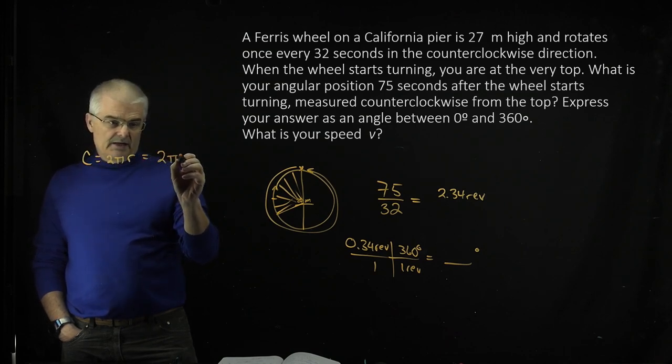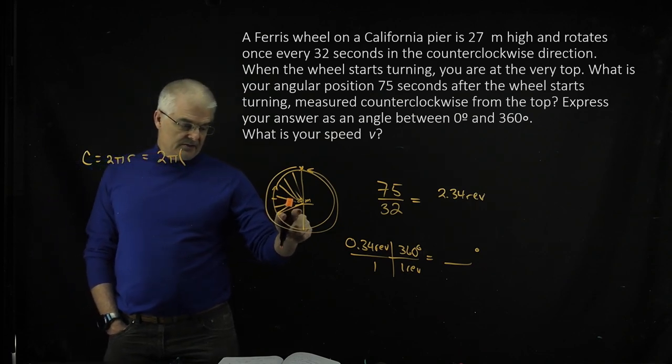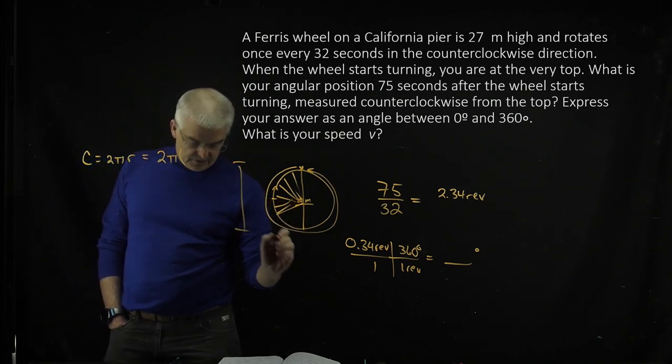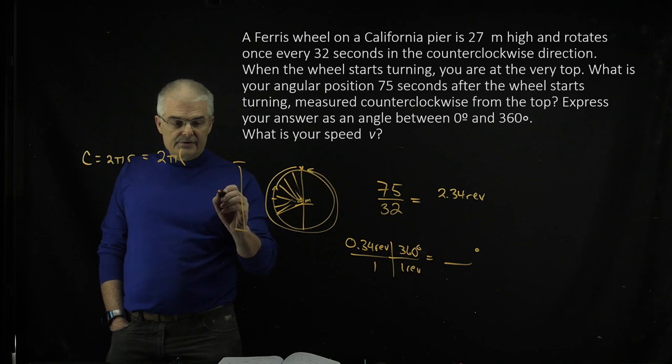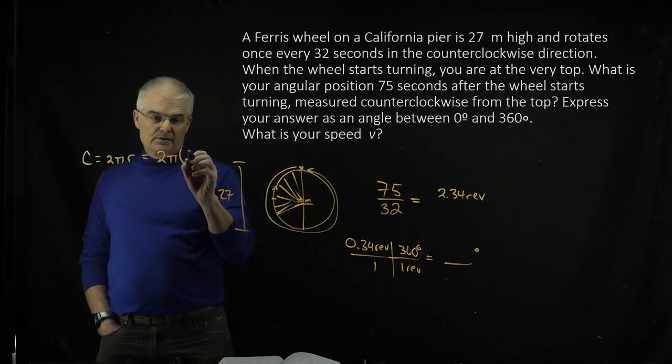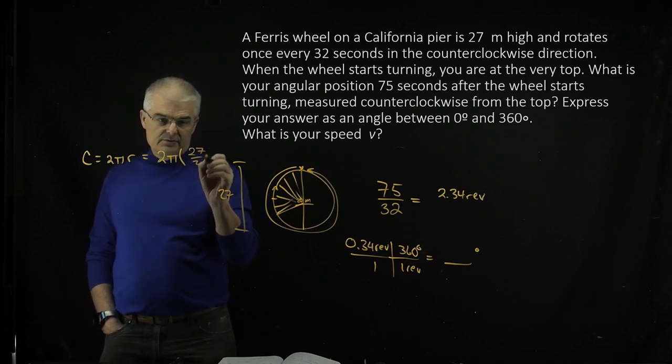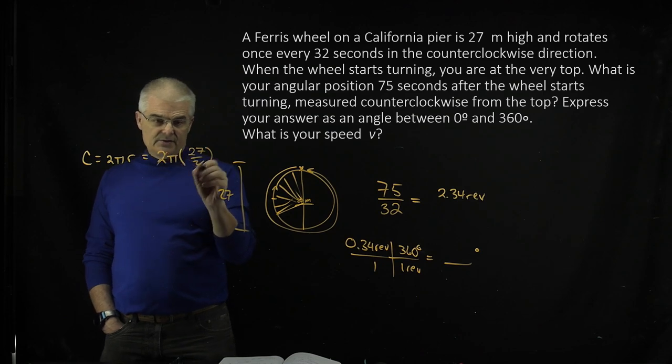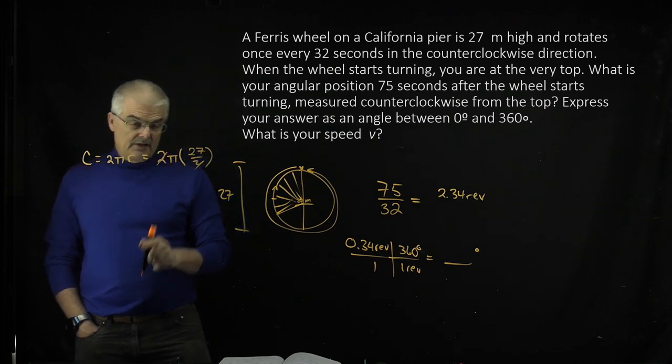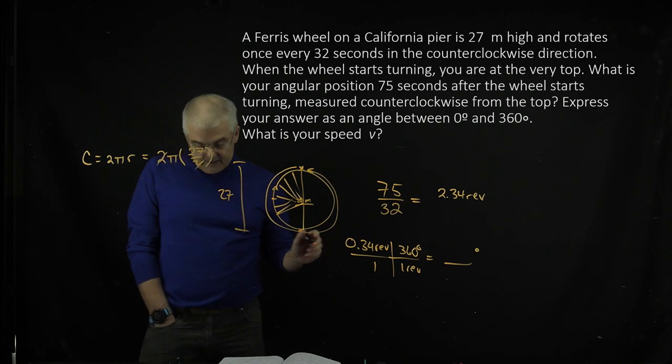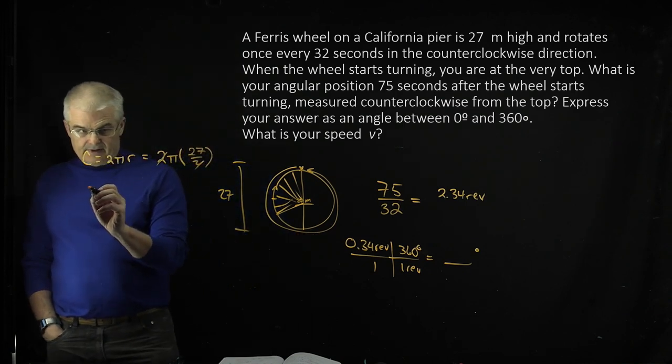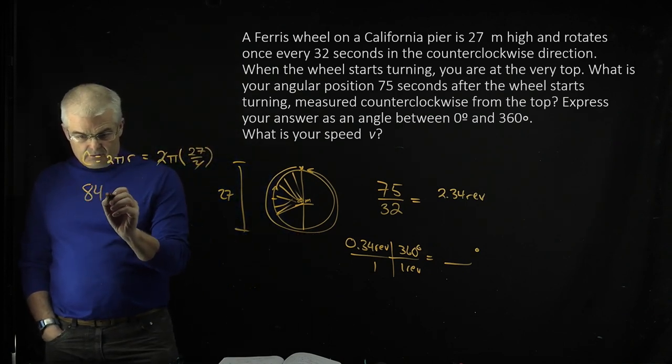Which is 2 times π. Now, times r, this height was 27 meters, so I took 27 over 2, because that's the r, and the 2's actually cancel, so it's 27 times π. And I found my meters, so I found the circumference to be 84 meters.